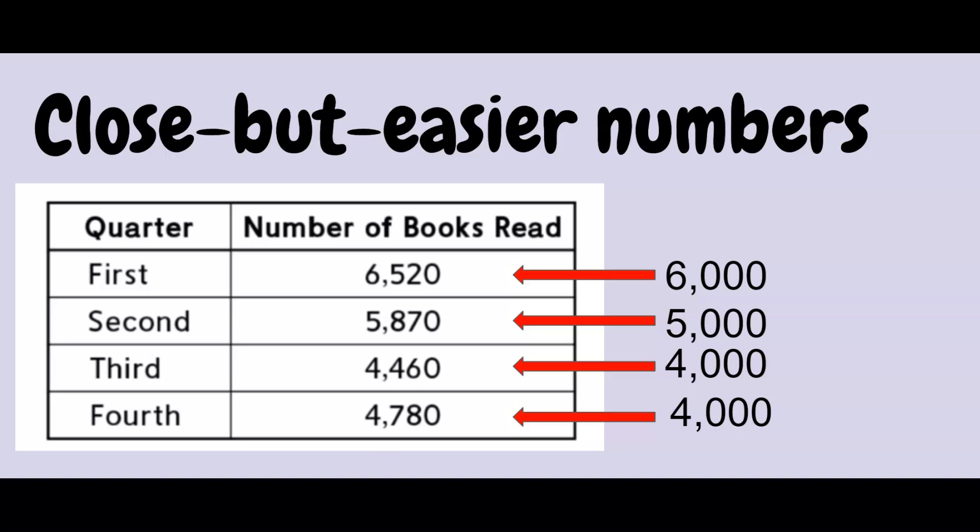So there's not just one correct way to choose close but easier numbers. Look at these close but easier numbers: 6,000, 5,000, 4,000, 4,000.